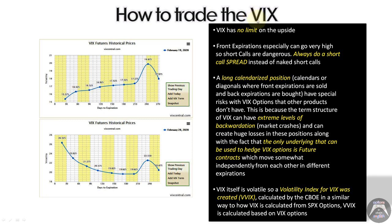With VIX options, you can do any option strategy you want: buy a call spread, buy a put spread, sell a call spread, sell a put spread, do a ratio spread, a back ratio, sell a straddle, buy a straddle, sell a strangle, sell an iron condor — it doesn't matter. They're VIX index options and any strategy applies. Just remember that long calendarized positions — calendars or diagonals where the front expirations are sold and back expirations are bought — have special risks with VIX options that other products don't have.